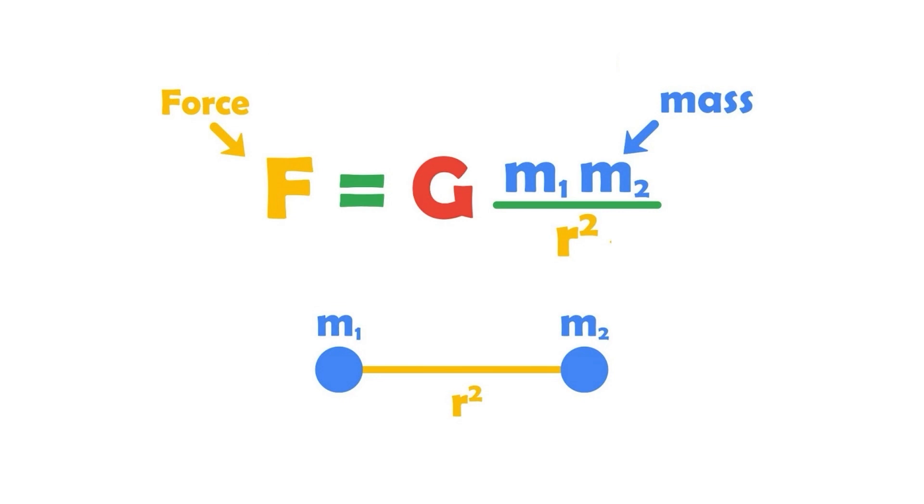They represent the masses of the different objects being attracted to each other. And then R on the bottom. That was a tough one. That one represents distance, the distance between the two masses. And then the big G is perhaps the hardest one. That one is called the gravitational constant.